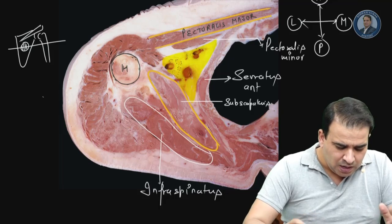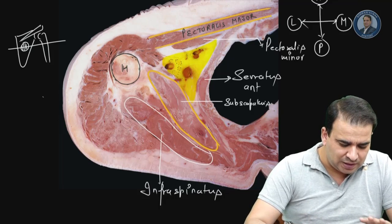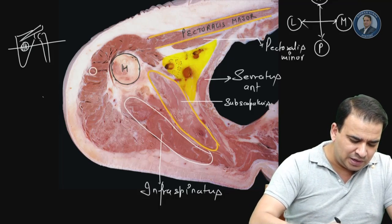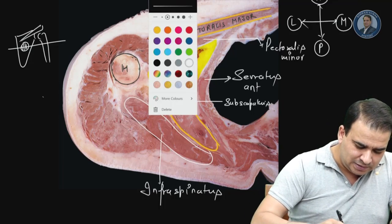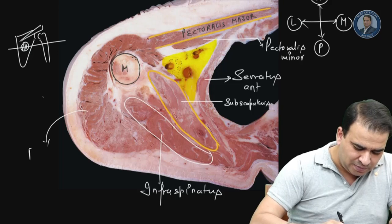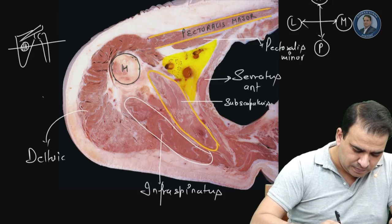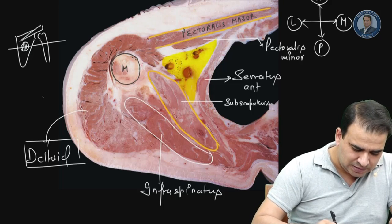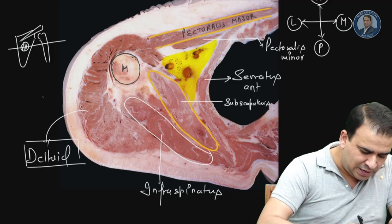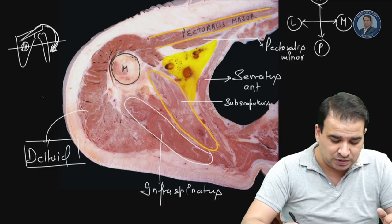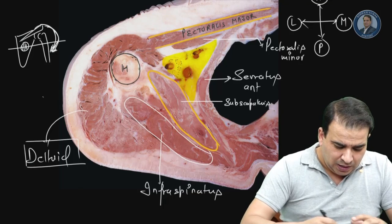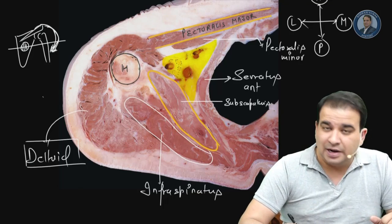One muscle that should not pose difficulty to identify is this large muscle forming the shoulder contour — that is the deltoid muscle. The deltoid comes from the acromion process and inserts onto the deltoid tuberosity on the lateral side of the shaft of the humerus.